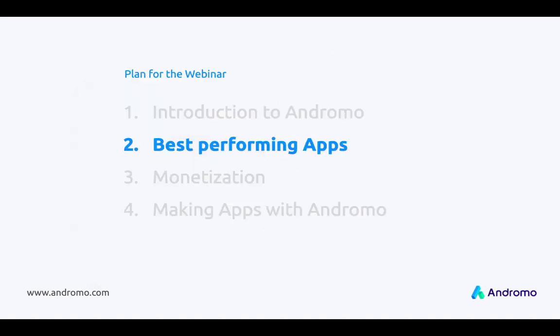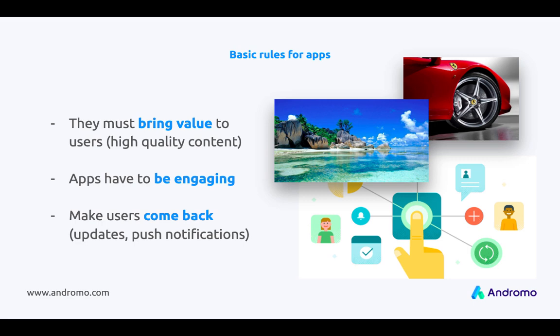So let's now move on and speak about best performing apps in Andromo. First of all we have to define what are the main criteria for best performing apps. They must bring value to customers, which means they must have cool and high quality content. They have to engage users so that users are happy with your content, and your apps have to make users come back often, because if you have an app with 1 million downloads but nobody opens it often you have no ad impressions. So in order to make users come back you have to make regular updates of your content and send users push notifications about updates or other events related to your app.